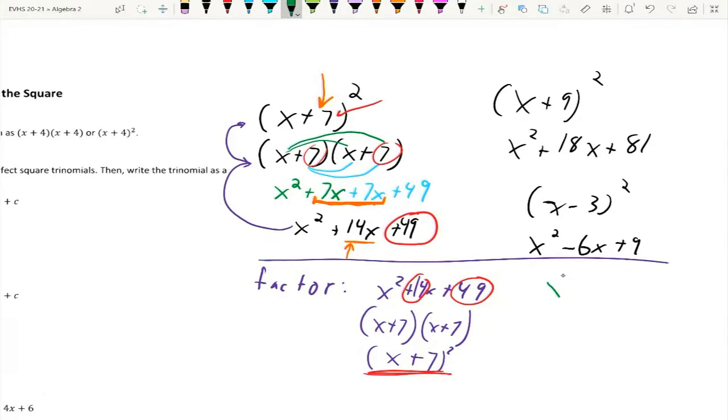So again, if I had something like x² + 12x + 36. Well, half of 12 is 6. The square root of 36 is 6. That means it fits my perfect square trinomial pattern. So this is (x + 6)².